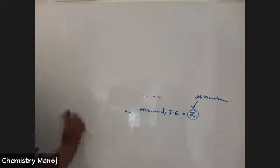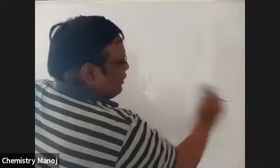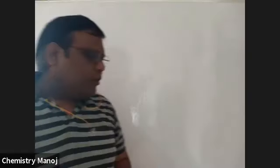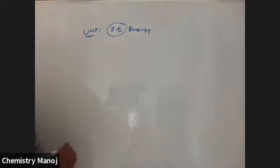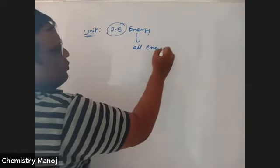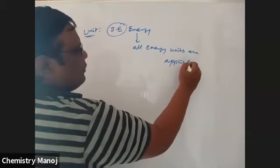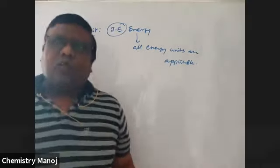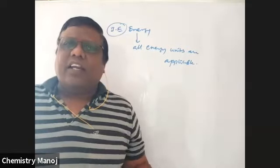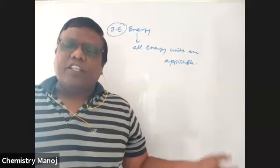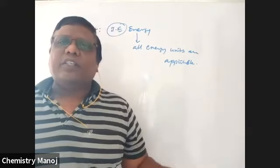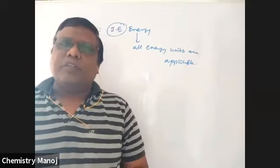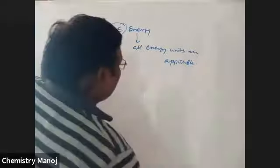What are the units of ionization energy? Since ionization energy is energy, all energy units are applicable — electron volts, kilojoules, calories. Joule is the MKS unit. Electron volts per atom is commonly used. All energy units are applicable to ionization enthalpy.